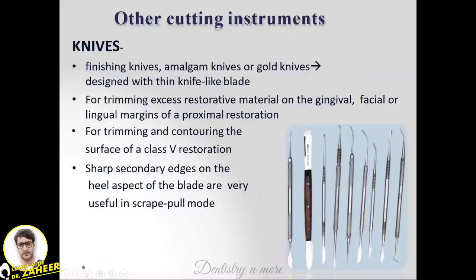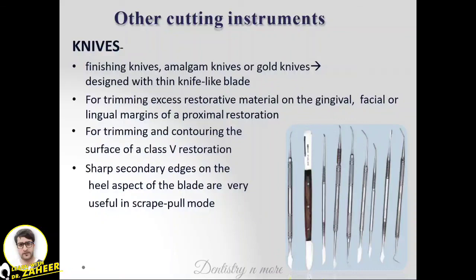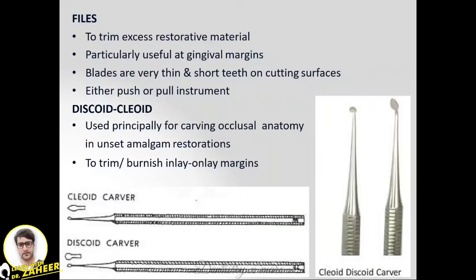Other cutting instruments include amalgam knives and gold knives, used for trimming excess restorative material on gingival, facial, or lingual margins, and for trimming and contouring classified restorations. The sharp secondary edge on the heel aspect of the blade is useful in a scrape-pull mode. Files are used to trim excess restorative material at gingival margins, used in a push or pull motion. The discoid-cleoid is used principally for carving occlusal anatomy in unset amalgam restorations.